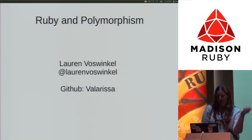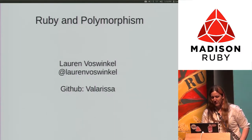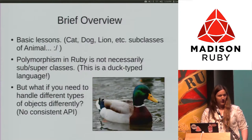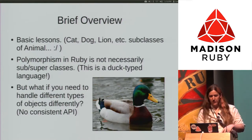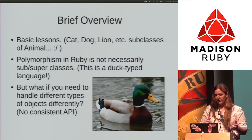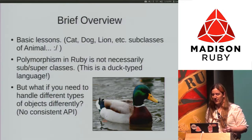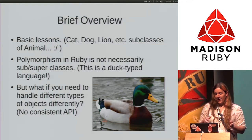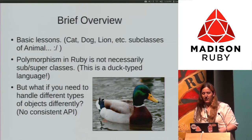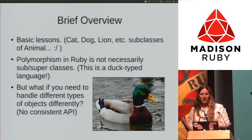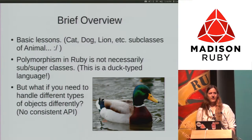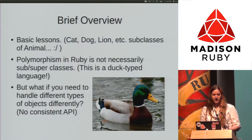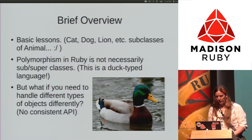I'm going to do a brief rundown on Ruby and polymorphism. The basic lessons you learned in college, like cat, dog, and lion are all subclasses of animal — that's kind of not the full spectrum of what you can do in Ruby.